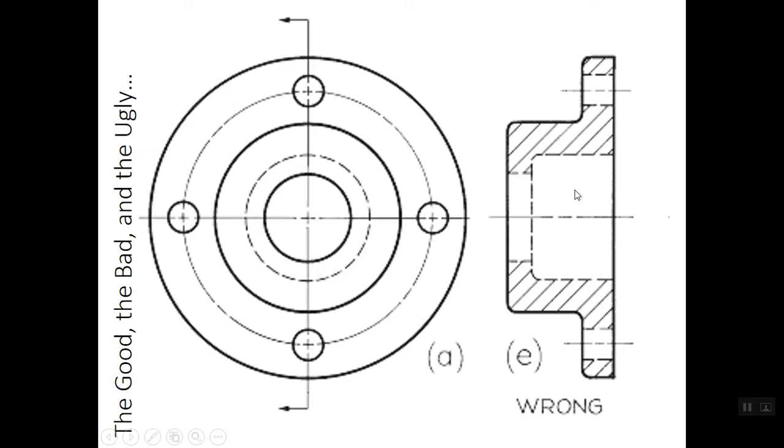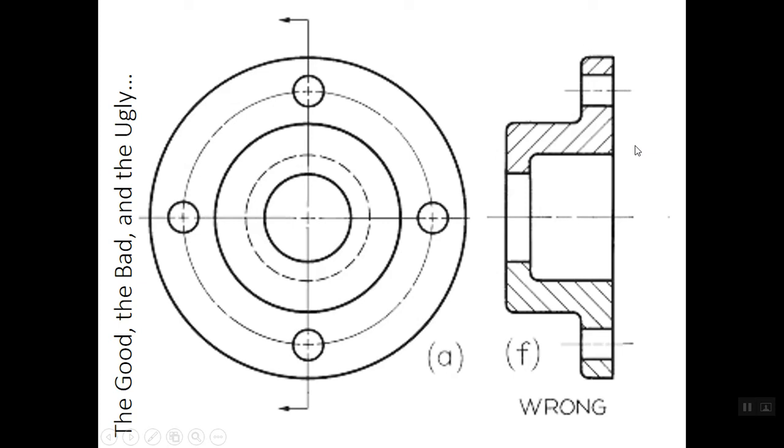Now, this one's a little bit trickier. Can you tell why this section view is incorrect? It's the section lining. See how it's going up to the right over here? And see how it's going up to the left over here?